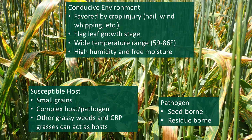When it comes to bacterial leaf streak, the three corners of the disease triangle are the conducive environment. It is favored by crop injury — hail, wind whipping, any type of injury to that flag leaf growth stage. The temperature range is quite high, but we start to see more extensive damage from bacterial leaf streak as you get above 80 degrees. High humidity and free moisture are also factors that can be contributing to the amount of disease in the field.